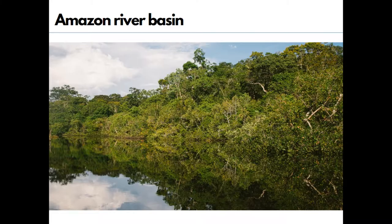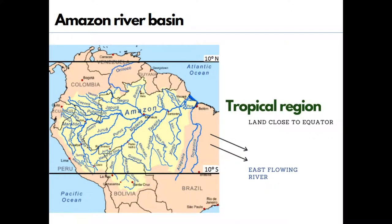First, let's see about the Amazon River Basin, which is in South America. On the globe, the river basin lies between 10 degrees north and 10 degrees south latitude. As it is close to the equator, it falls under the tropical region — we can also call this an equatorial region. The Amazon is an east-flowing river and it finally reaches the Atlantic Ocean on its east.